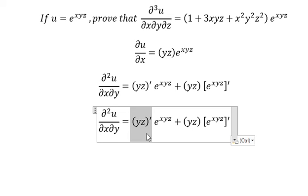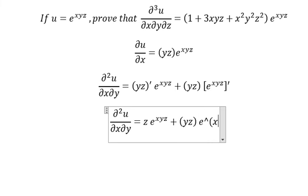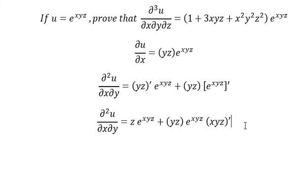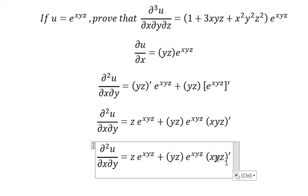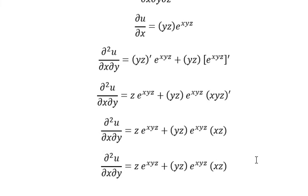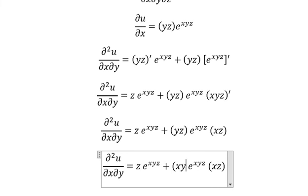So here we have z. This part gives us e to the power of xyz. Then we continue to do the first derivative of xyz — since x and z are like numbers, we get xz. So xz multiplied by yz gives us xyz square.